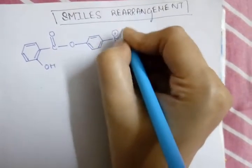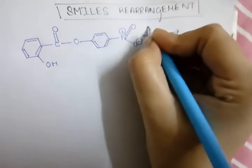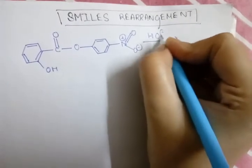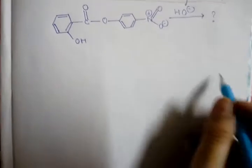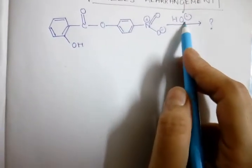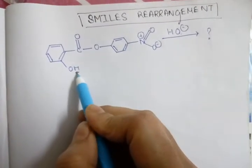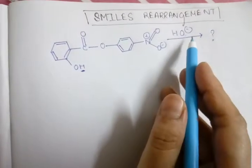An electron withdrawing group NO2 is present in another benzene nucleus. If it is treated in HO minus medium, in alkali medium, then what will happen? At first, this HO minus will act as a base and it will capture the acidic hydrogen. Where is the acidic hydrogen? The acidic hydrogen is there.